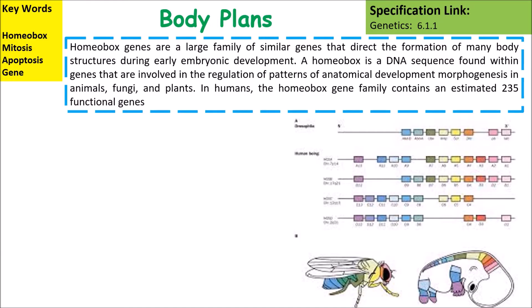Homeobox genes are a large family of similar genes that direct the formation of many body parts and structures during early embryonic development. A homeobox is a DNA sequence found within genes that are involved in the regulation of patterns of anatomical development and morphogenesis in animals, fungi, and plants.